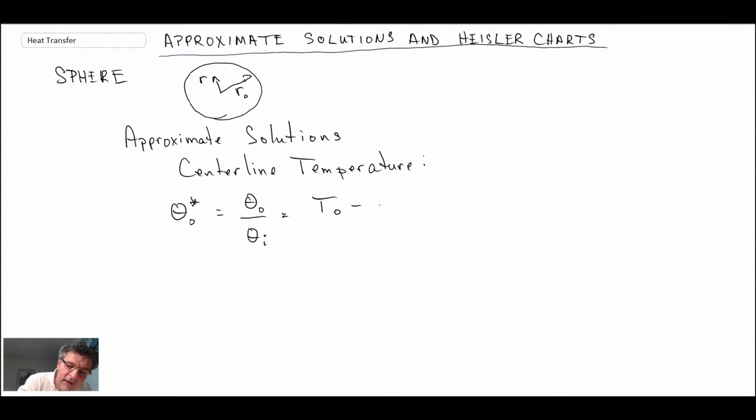So here we're evaluating theta naught star, which is theta naught divided by theta I. Those are defined as being the centerline temperature minus the free stream convective environment, and then Ti our initial temperature minus the free stream convective environment temperature. Just like for the slab and for the infinite cylinder, we have the expression C1 exp minus zeta 1 squared, and then we have the Fourier number.